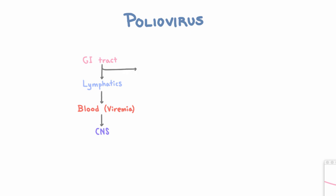So first of all, it turns out that in 90% of people, the virus never gets into the blood in serious quantities, so they have no symptoms. They do have viral replication in the gut, and they shed the virus into their feces and can spread it to other people, but they never know it. So we call that subclinical.